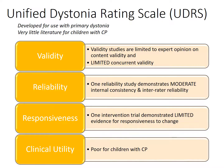The Unified Dystonia Rating Scale was developed by the Dystonia Study Group for use with patients with primary dystonia. Very little literature was available regarding its use for children with CP, as this was not the intended diagnostic group for the tool. It shows limited validity, moderate reliability, and lacks evidence for responsiveness to change, with only one paper reporting its use in a study with children with CP.